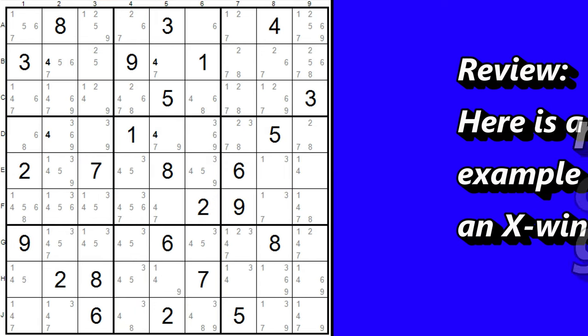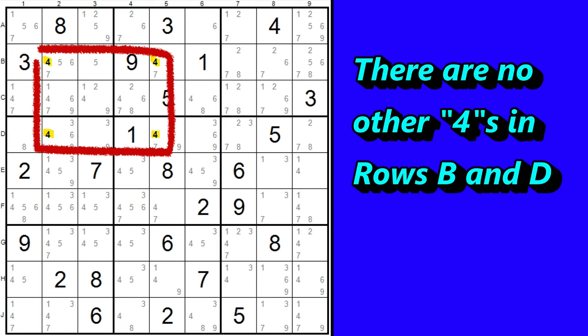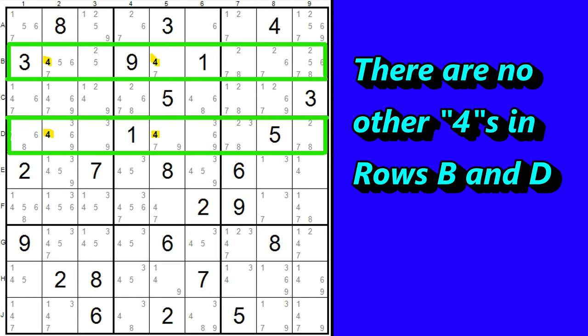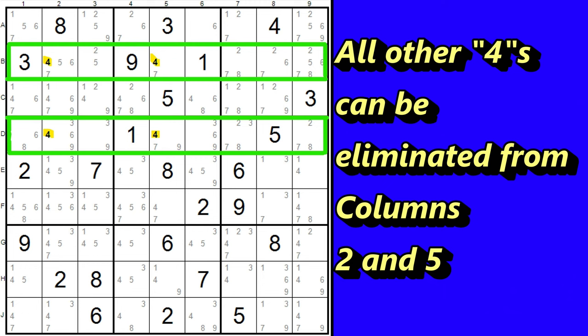This is also true if two rows have no other cells with the same number. In this case, the 4 forms the corners of the rectangle, and it is the only candidate in rows B and D. The X-Wing pattern forms where the 4s lie at the corners of a 2x2 rectangle. Since we have no other 4 candidates in the same row, then all the other 4 candidates in the same column can be eliminated.